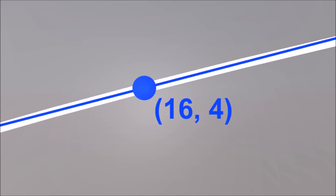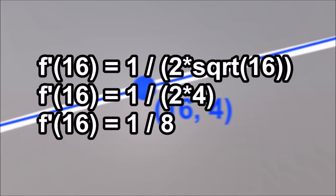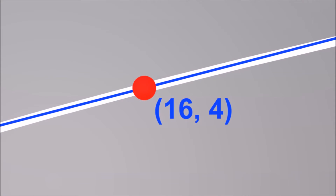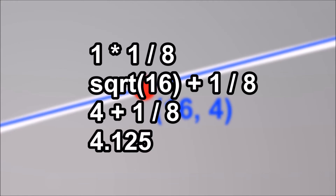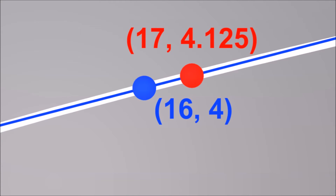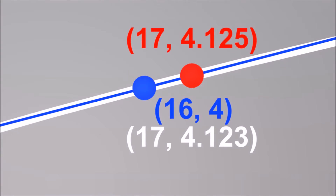Since we chose the point 16, we need to find the slope of the function at 16. If we put 16 into the derivative function, we get the slope 1/8, which means that at that point on the graph, for every 8 units x increases, the y value will increase by 1. Since 17 is 1 away from 16, we multiply 1 by the slope to determine that the square root of 17 is about 1/8 greater than the square root of 16, which is 4. Add the 1/8 to the 4 and you get 4.125, which is pretty close to the actual value of the square root of 17: 4.123.